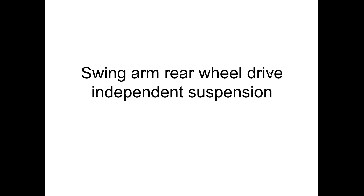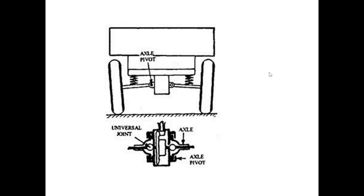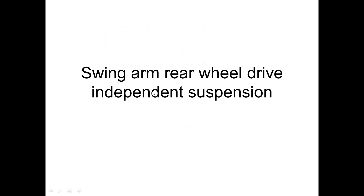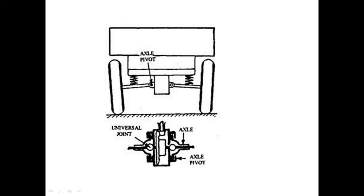In our class, we have a suspension system with rear wheel drive independent suspension system. We have to use a pivot axle. This is the differential. We have to use a rear wheel drive rigid dead axle. This is the differential axle — we have to use a tube.